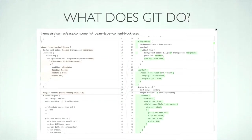Version control doesn't need to scare you — it's actually quite a simple concept. All version control does in its simplest terms is track changes to files, specifically text-based files. If you've ever used revisions in Drupal on nodes and turned on the diff module and clicked that little button to see what changed — that's version control at a code level, nothing more, nothing less.